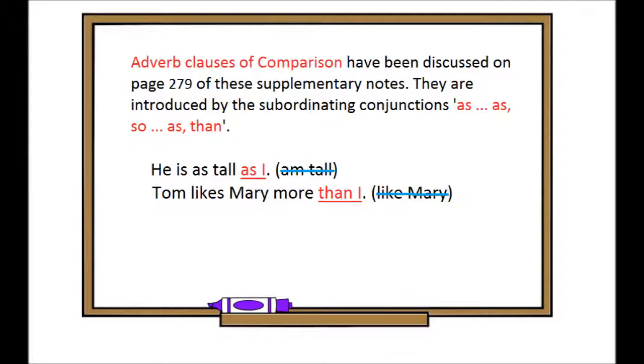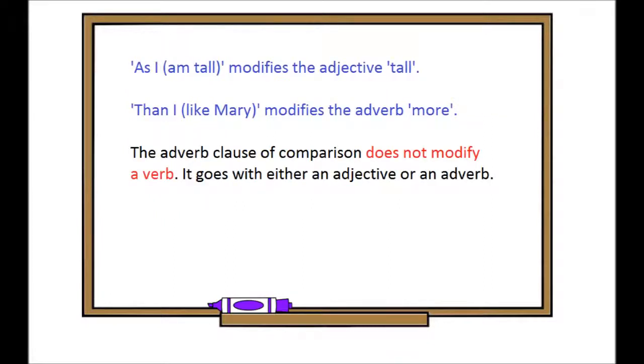He is as tall as I am tall. Tom likes Mary more than I like Mary. 'As I am tall' modifies the adjective 'tall.' 'Than I like Mary' modifies the adverb 'more.' The adverb clause of comparison does not modify a verb. It goes with either an adjective or an adverb.